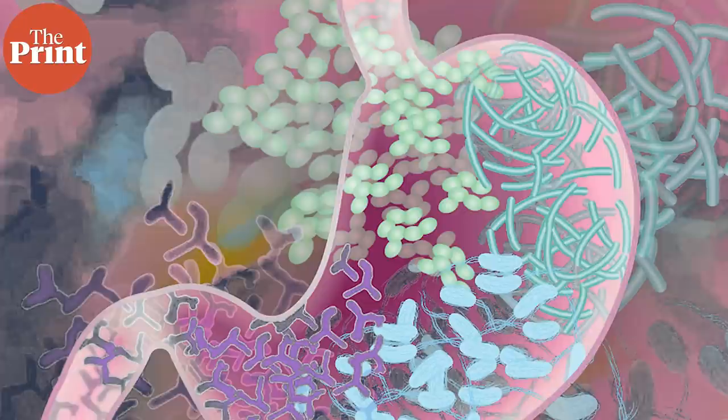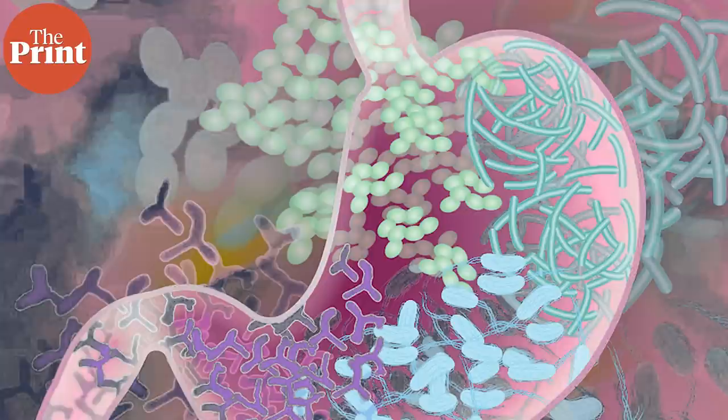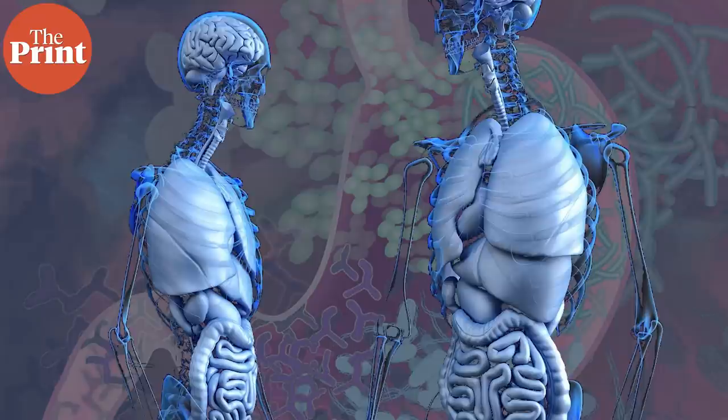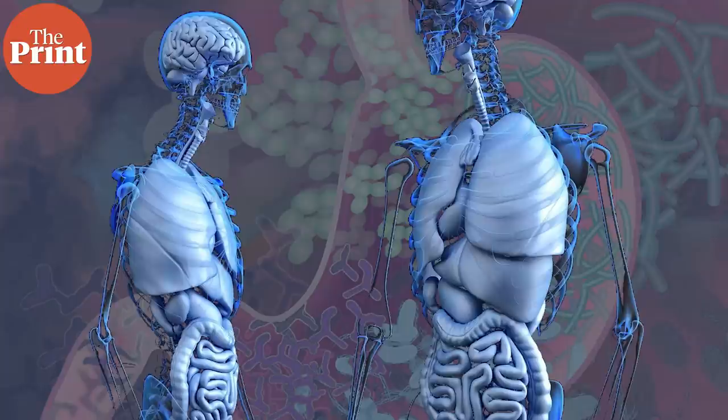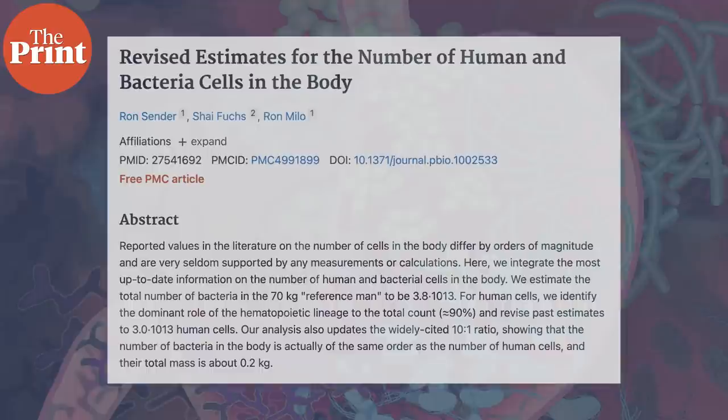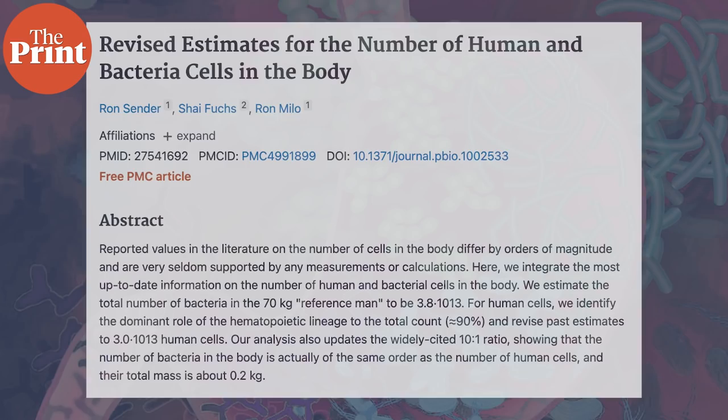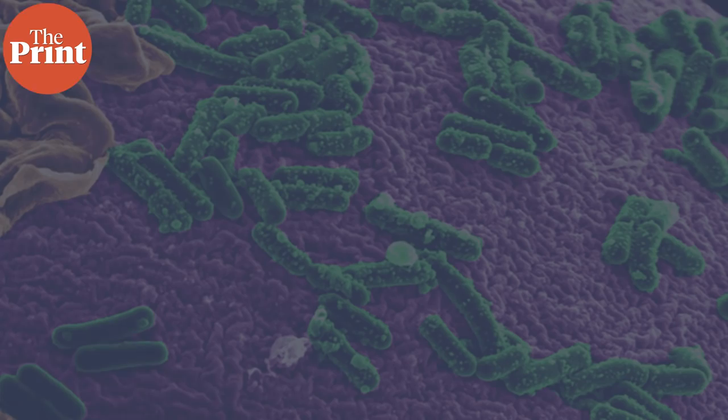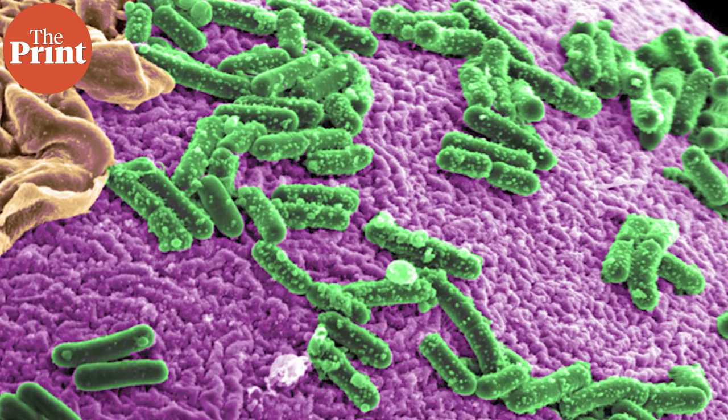Every food and meal we eat influences the bacteria present in our gut for a better or worse outcome. A human body houses trillions of microorganisms, or gut flora. In a recent study, Ron Sender and colleagues estimated that the number of bacteria in the human body is the same as the number of human cells, with a total mass of about 0.2 kg. Almost a thousand species of bacteria live in the human gut, each playing a crucial role.